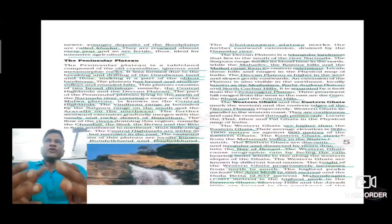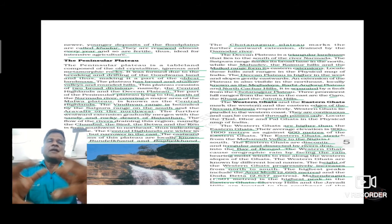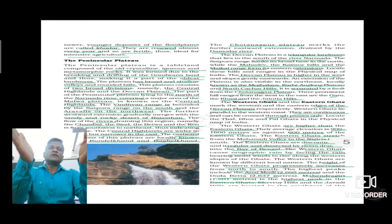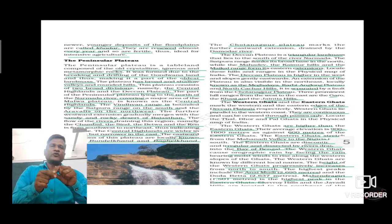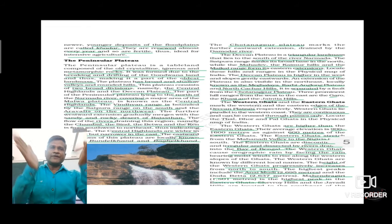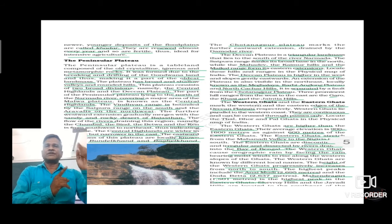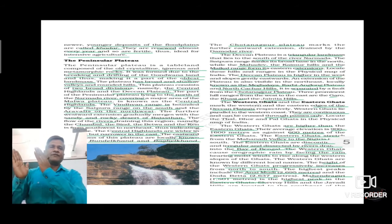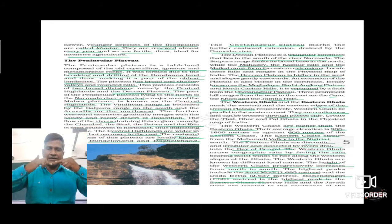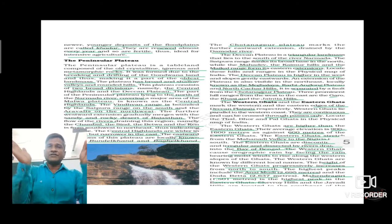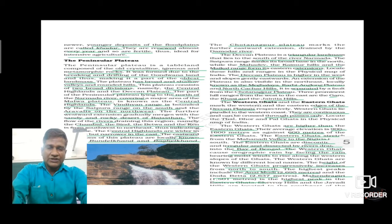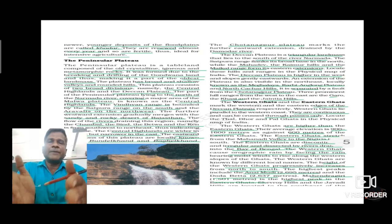We are now going to discuss the next physiographic division — the Peninsular Plateau. 'Peninsular' refers to the shape of India: if you look from Gujarat to West Bengal and down to Kanyakumari or Tamil Nadu, you will find that India is surrounded by water on three sides — the Bay of Bengal in the east, the Arabian Sea in the west, and the Indian Ocean in the south. A large piece of land surrounded by water on three sides is called a peninsula. So the shape of India is peninsular. A plateau is a large, high area of flat land in comparison with surrounding hills and mountains.